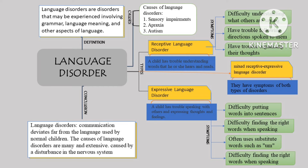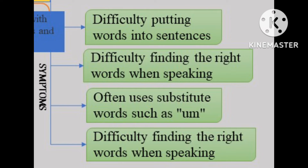Children with expressive language disorders have difficulty putting words into sentences, the sentences may be simple and short, and the word order may be incorrect. They also have difficulty finding the right words when speaking and often use substitute filler words. They have a vocabulary below the level of other children their age, use certain phrases repeatedly, and use tenses such as past, present, and future inappropriately.